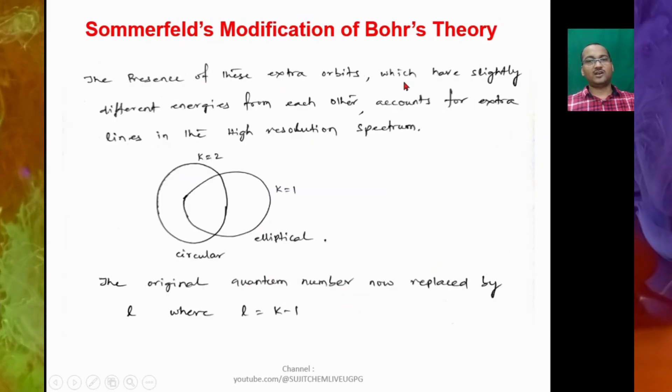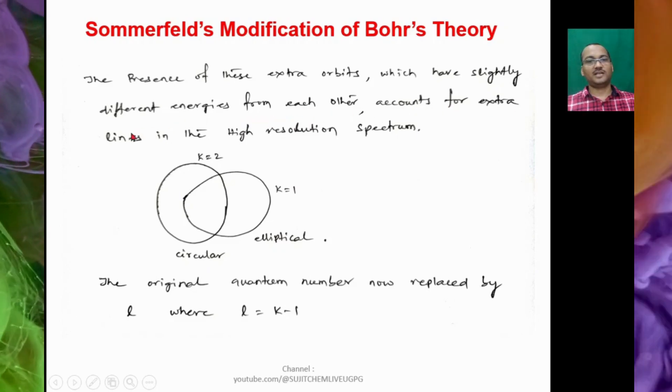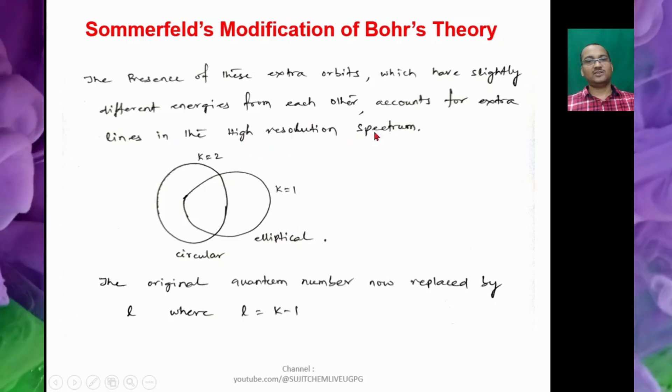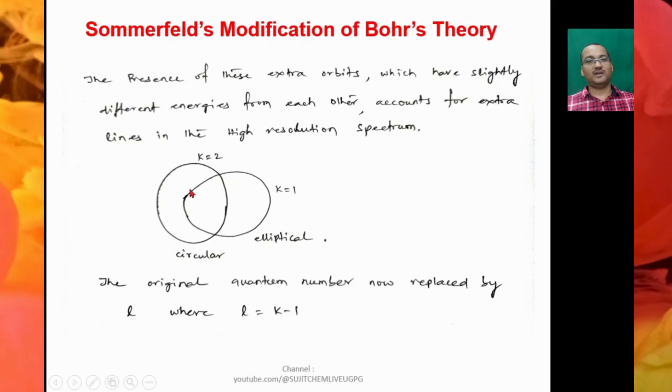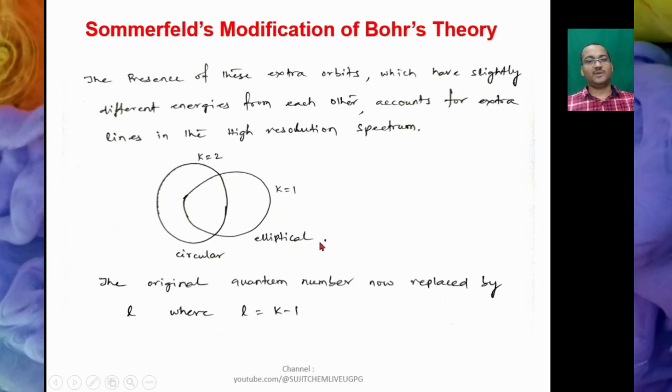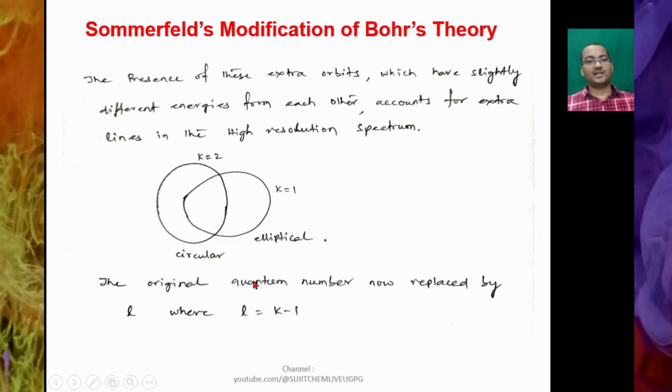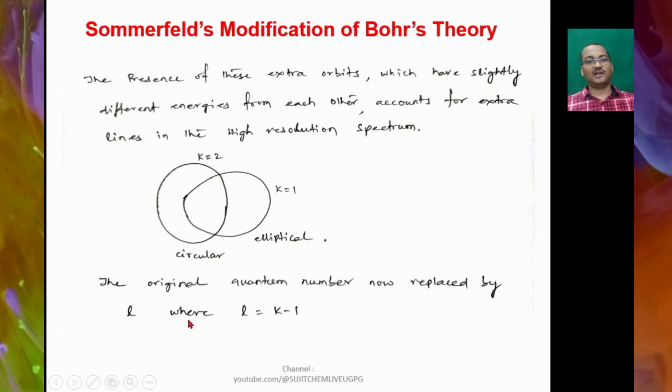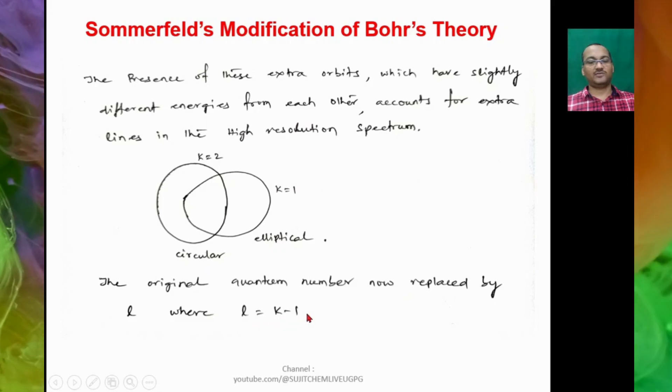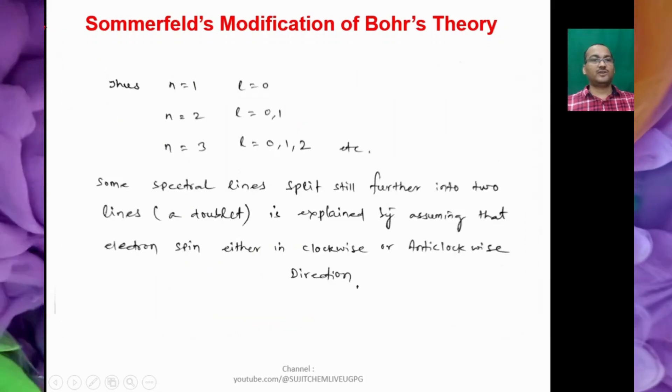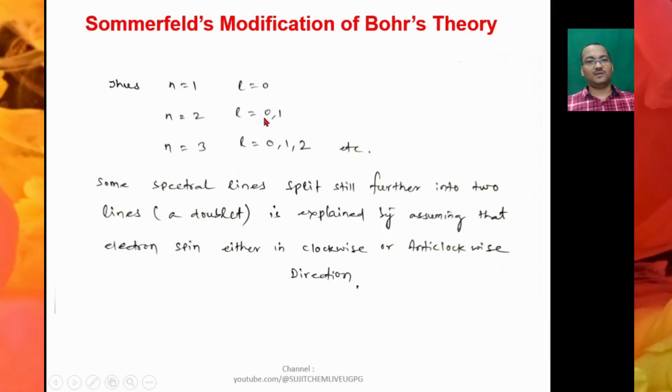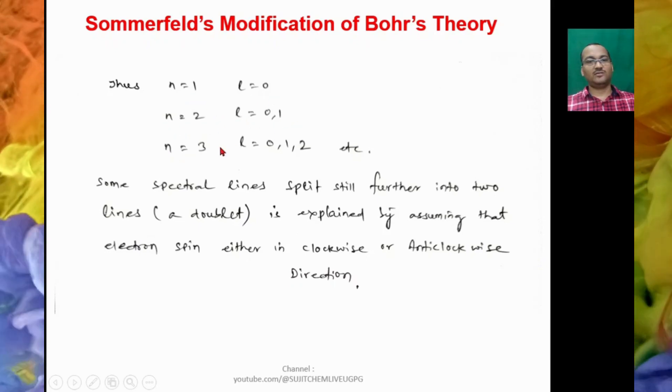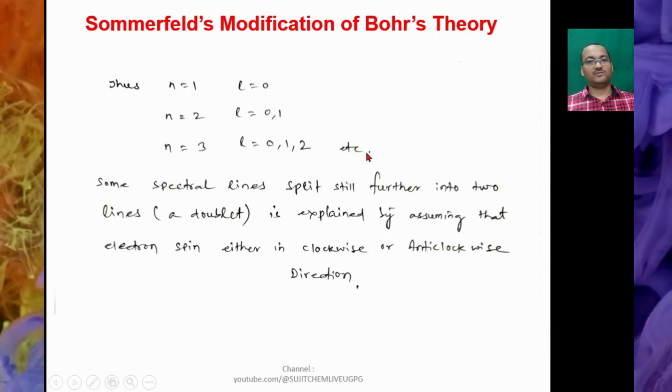So the presence of these extra orbits which have slightly different energies from each other accounts for extra lines in the high resolution spectrum. So here K = 2 is circular orbit and K = 1 is elliptical orbit. The original quantum number is now replaced by L, where L = K - 1. So thus we can have when N = 1, L value 0; N = 2, L can have 0 and 1; N = 3, L value can be 0, 1, 2, etc.